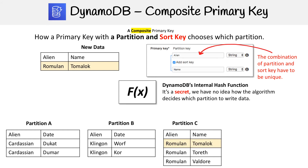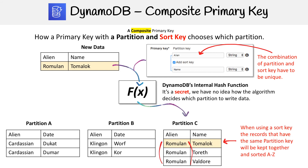What we're going to do is take our primary key and our data, and it's going to get passed to that internal hash function. This happens automatically when you write to DynamoDB — you don't have to literally call it. Then it's going to decide to put it in partition C. This is a little different from a simple primary key, which just puts data in a random partition — this one puts it with data that is similar to it.